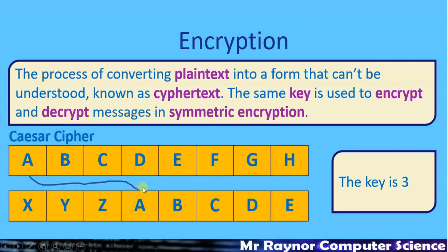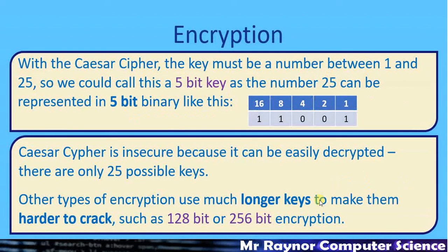The Caesar cipher is very limited — there are only 25 possible keys, so it's not very secure. In terms of how secure it is: if we move letters 26 times we'd be back to the start, so keys run between 1 and 25. Linking with the binary topic: the number 25 requires a 16, an 8, and a 1, so in five bits we can represent 25 — meaning Caesar cipher is effectively a five-bit method. These days, website security more likely uses 128-bit or 256-bit encryption, representing a vastly larger number of possible keys.